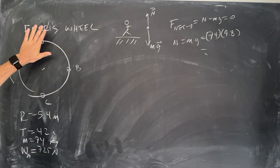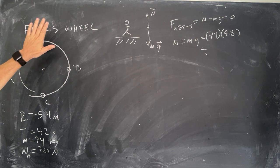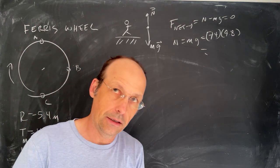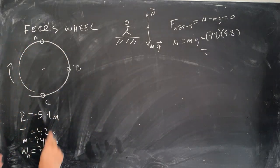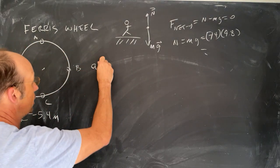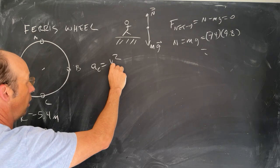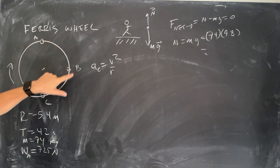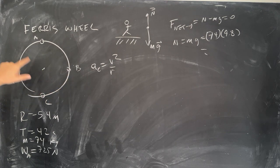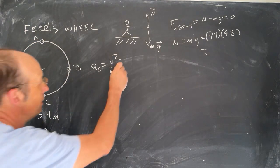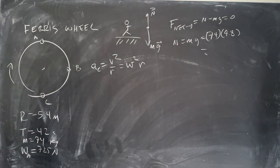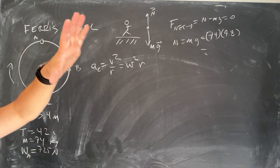Now we're going to need one other thing. The centripetal acceleration is V squared over R. I could calculate the velocity at all these points, but it's going to be easier to just say omega squared times R. That's the other definition for the centripetal acceleration.